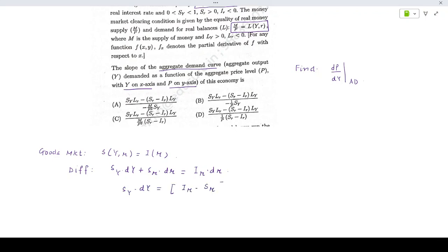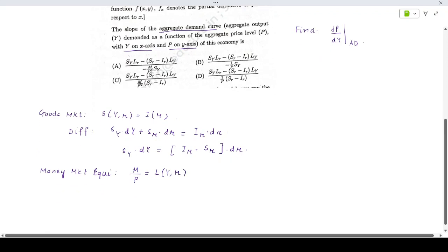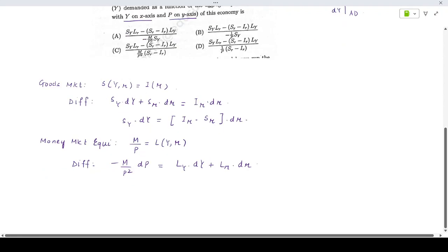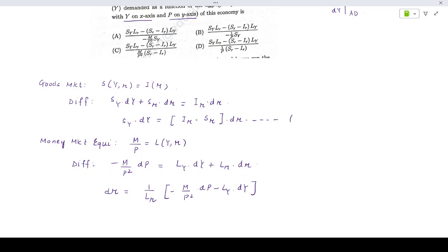The money market equilibrium is M/P equals L as a function of Y,r. The variables that will change are r, P, Y, and r. If we differentiate this, that is minus M/P squared dP equals Ly dY plus Lr dr. From here we can express dr as 1/Lr times (minus M/P squared dP minus Ly dY). This is equation 2.